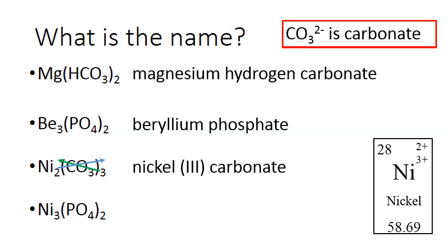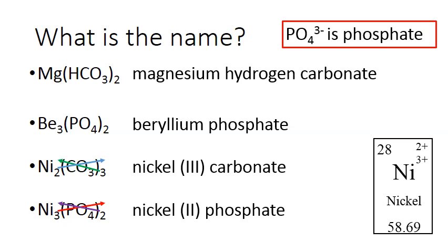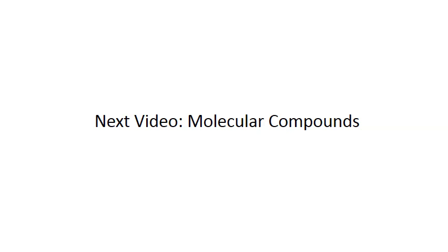For the next one, we have nickel and PO4, which is phosphate. PO4 is 3-, so that's where the 3 comes from. The 2 then goes to the nickel, so that must be nickel 2+, which means this is nickel(2) phosphate. Well, that's it for this video. Tune in next time for molecular compounds, which will be our last grade 9 chemistry lesson.